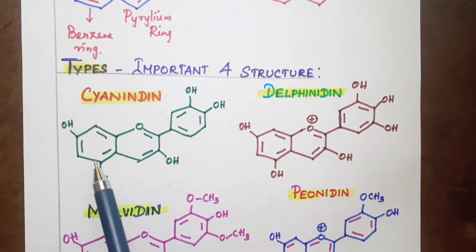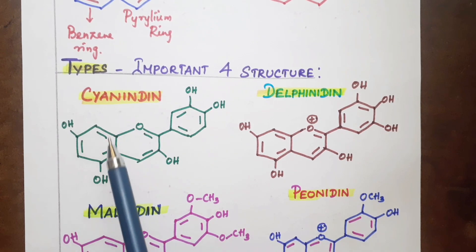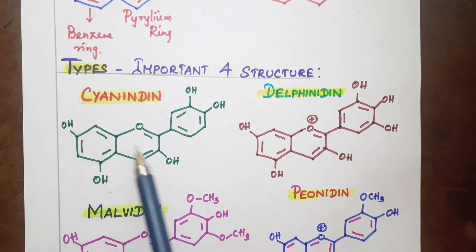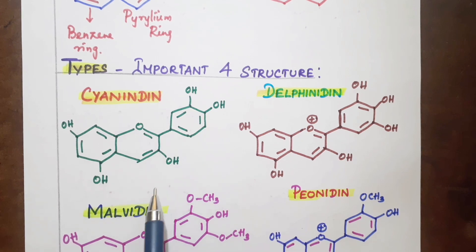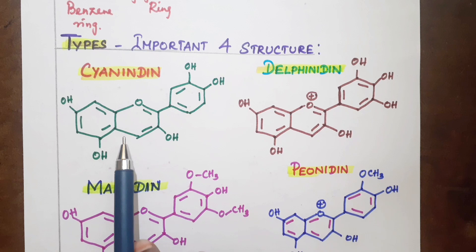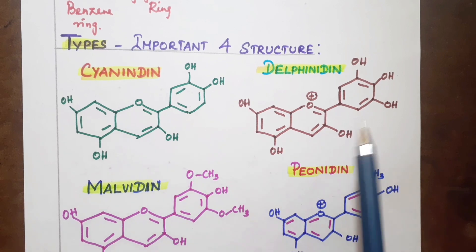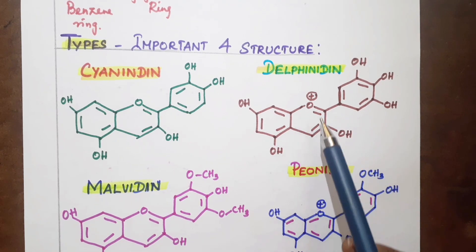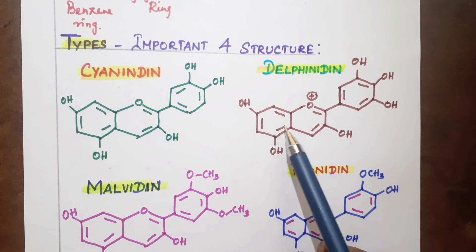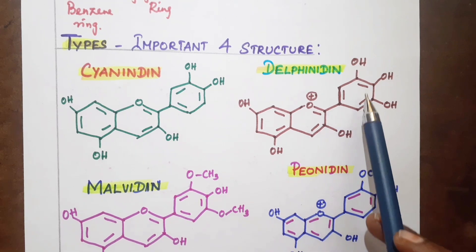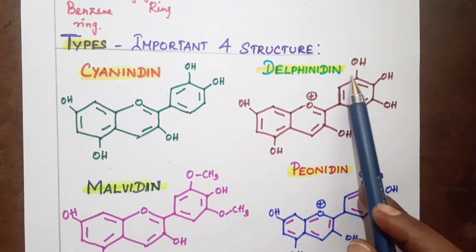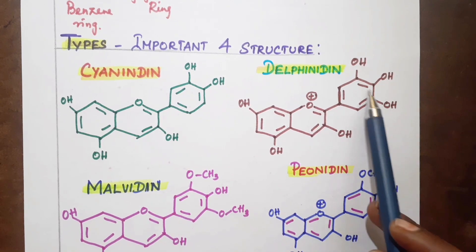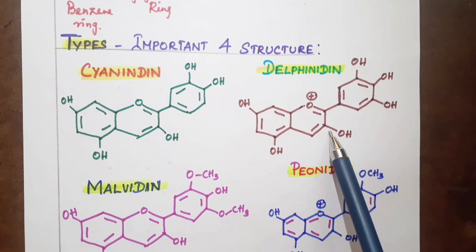In Cyanidine, the benzene ring positions 1, 2, and 3 are noted — this is the third compound. It has an OH-OH substitution pattern. The second type is Delfinidine, which has a benzene ring, a pyrylium ring, and is trihydroxy — meaning there are 3 OH groups present on the benzene ring.